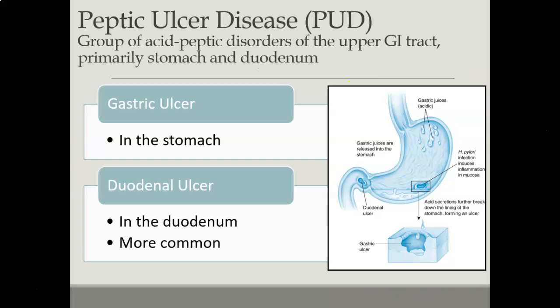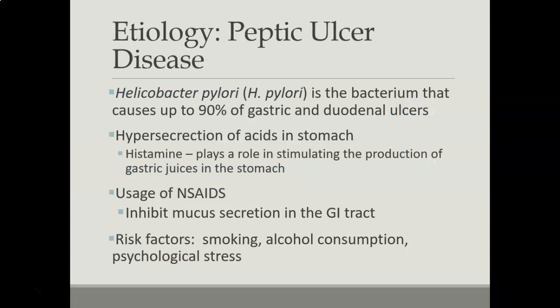Peptic ulcer disease is a term for several acid peptic disorders affecting the upper GI tract, but mostly the stomach and the duodenum. If a person has a gastric ulcer, it's located in the stomach; a duodenal ulcer is located in the duodenum, and duodenal ulcers are more common. The medical community used to think ulcers were just from excessive stomach acid, but it was discovered that a bacteria called Helicobacter pylori — or H. pylori — causes about 90% of peptic ulcers. Other factors include excessive gastric juices, heavy NSAID use, smoking, alcohol, and stress.